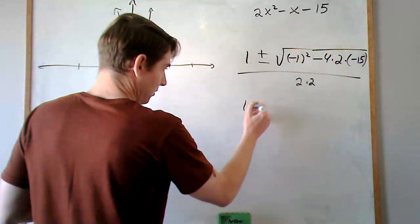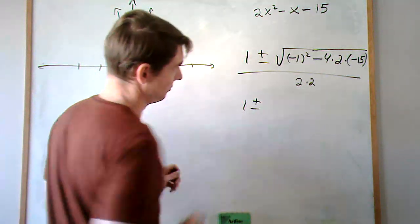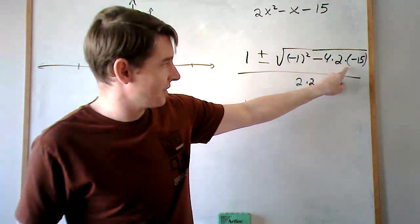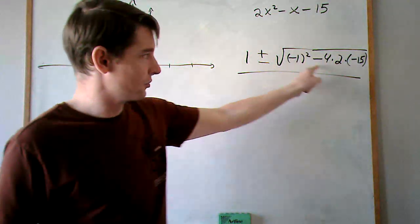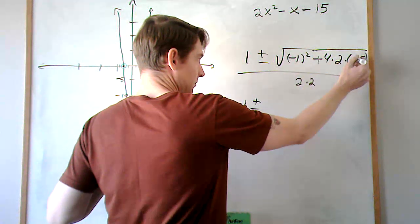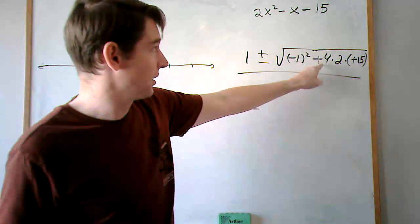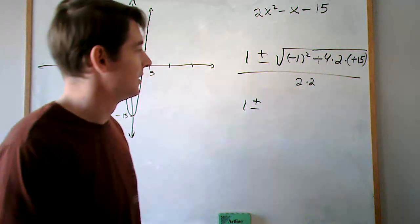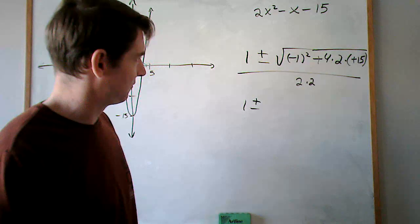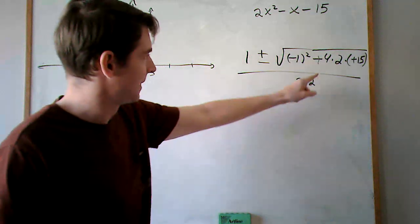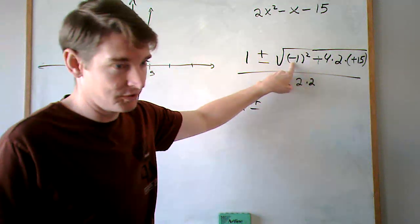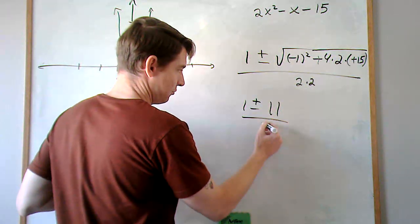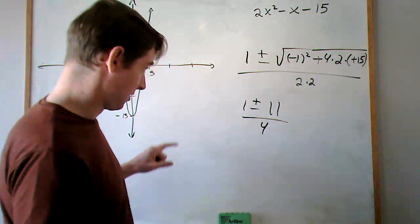So we get 1 plus or minus. Here we've got negative 4 times 2 times negative 15, so those negatives are going to cancel. We end up with 8 times 15, which is 120. And then we're adding to 1, so that's 121. We're taking the square root, we get 11. All over 2 times 2, which is 4.